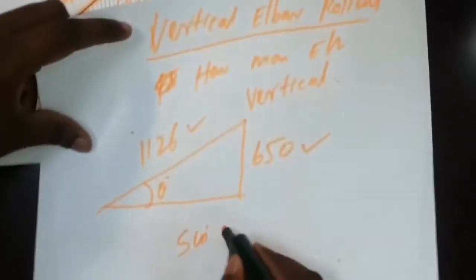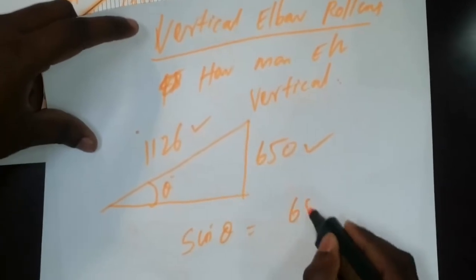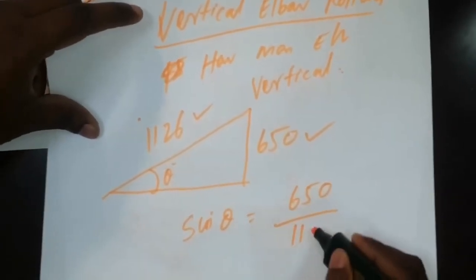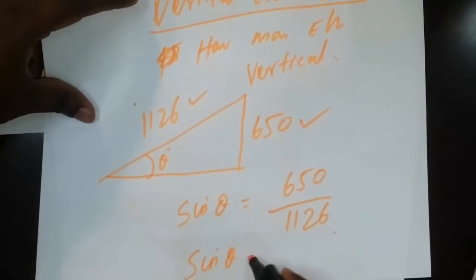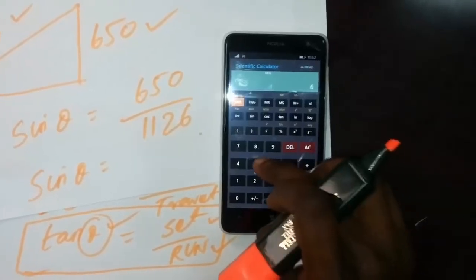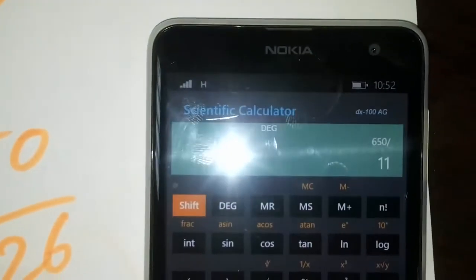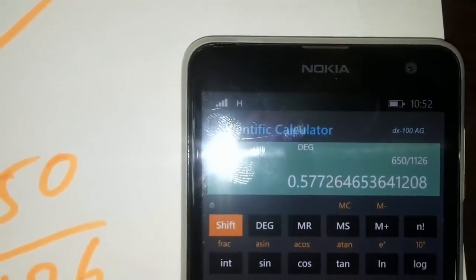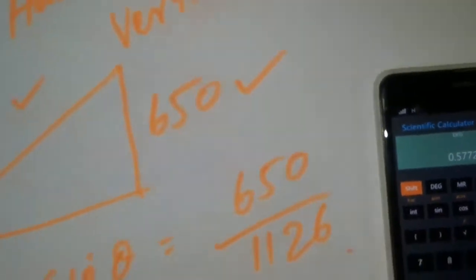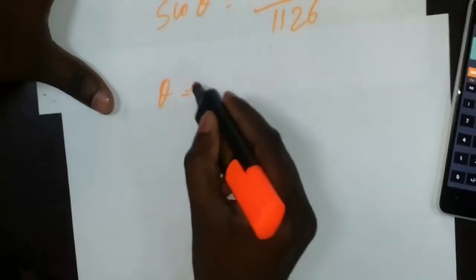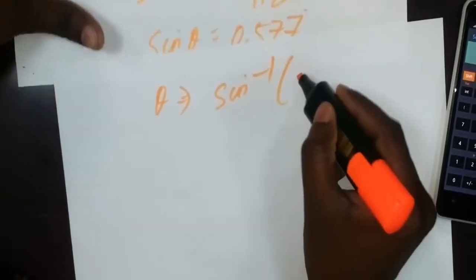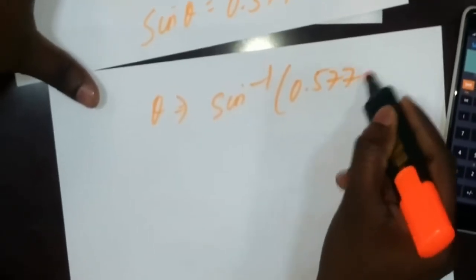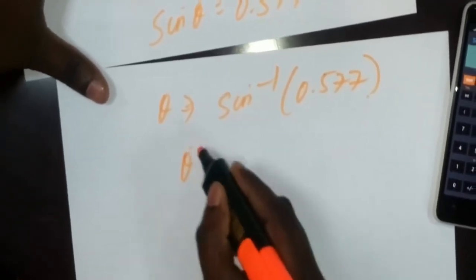So sin theta equals 650 divided by 1126, which gives sin theta equal to approximately 0.577. Therefore theta equals sin inverse of 0.577.